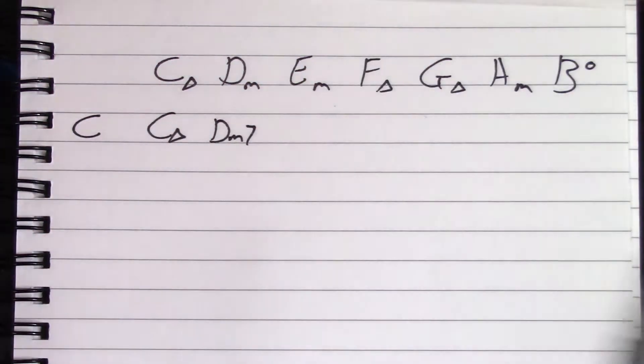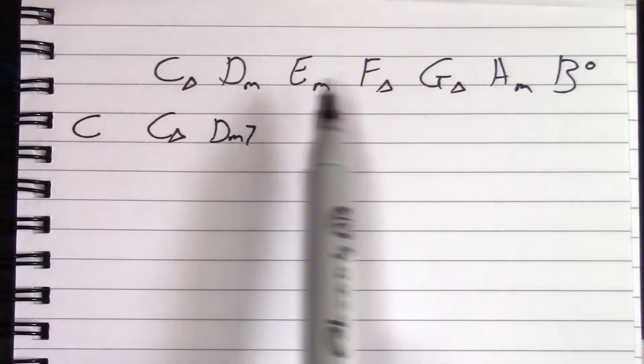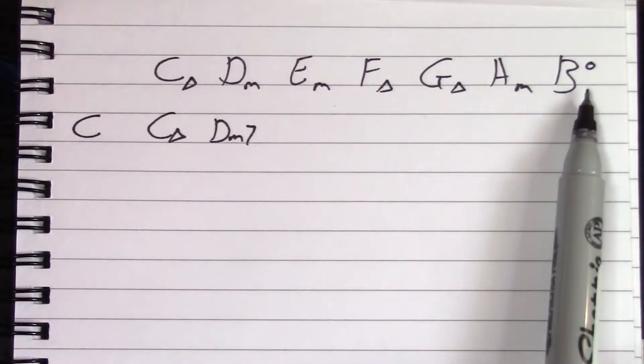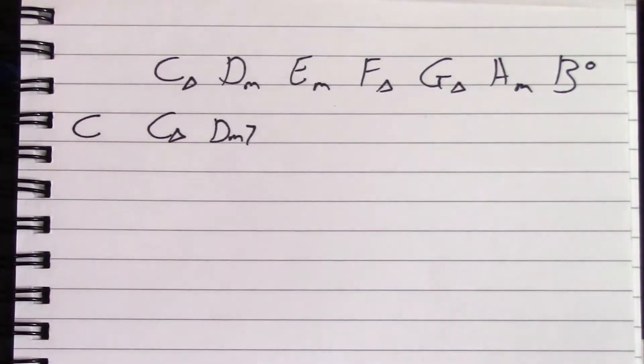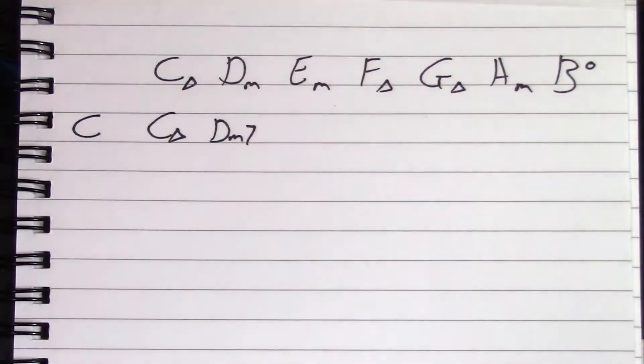We go root, two, three, four, five, six, seven. It's a minor chord, therefore it's a minor seven. Well, that isn't always true, but it is in this case.